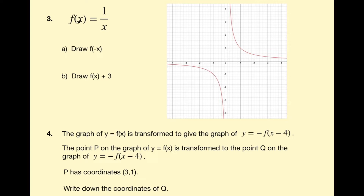Example 3 gives us f of x equal to 1 over x — a reciprocal function. You might be asked to draw f of negative x. If you can't remember what that is, check the rules: it's a reflection in the y-axis, so we need to reflect this graph in the y-axis.